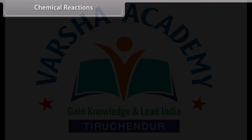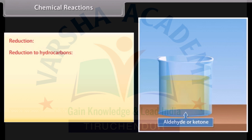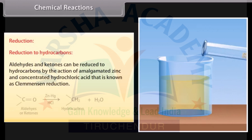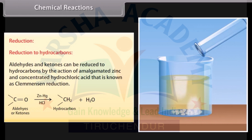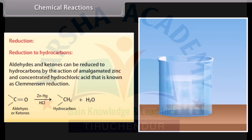Reduction to hydrocarbons: aldehydes and ketones can be reduced to hydrocarbons by the action of amalgamated zinc and concentrated hydrochloric acid. This is known as Clemmensen reduction.